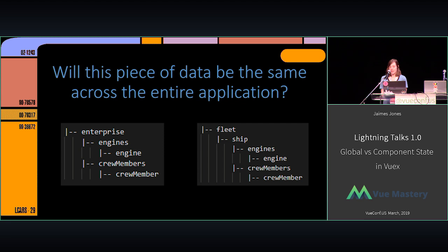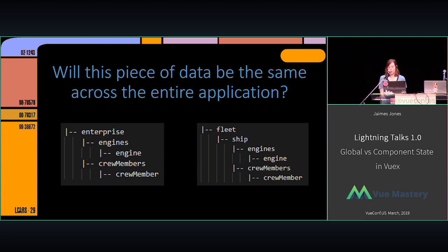The first question I ask myself is: is this piece of data going to be the same across the entire application? Here we have an example where the Enterprise is your root application — in that case, your engines and your crew members should be in your global state, because there's only one instance of engines and one instance of crew members. On the other hand, if you have the whole fleet as the application and each ship has its own engines and crew members, those should belong to the ship so it can pass them down, since there are multiple instances.